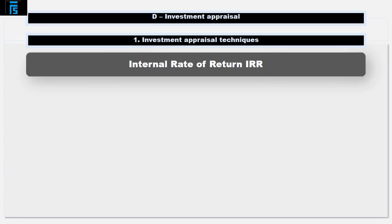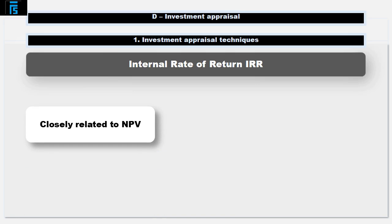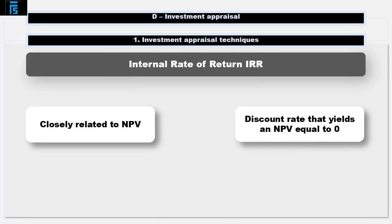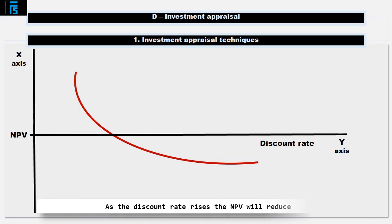Lastly, let's now consider our final investment appraisal technique: Internal Rate of Return or IRR. IRR is closely related to NPV — it is the discount rate that yields an NPV equal to zero. If we took the cash flows associated with a project and did several different NPV calculations at different discount rates and plotted the results on a graph, the more heavily we discount future flows, the less they are worth in present value terms and the lower the NPV becomes. The IRR is where this curve crosses the x-axis — this is the discount rate where NPV equals zero.